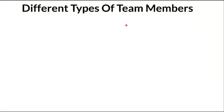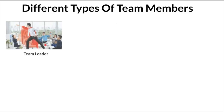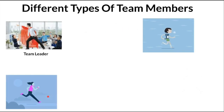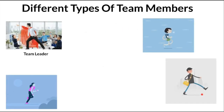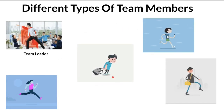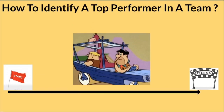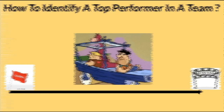There are different types of team members: team leader, runners, joggers, walkers, and riders. The car is the goal, and the team members have to move it from start to finish. Each team has a leader, and the responsibility of the leader is to set the goal, motivate the team, and give direction to the team.